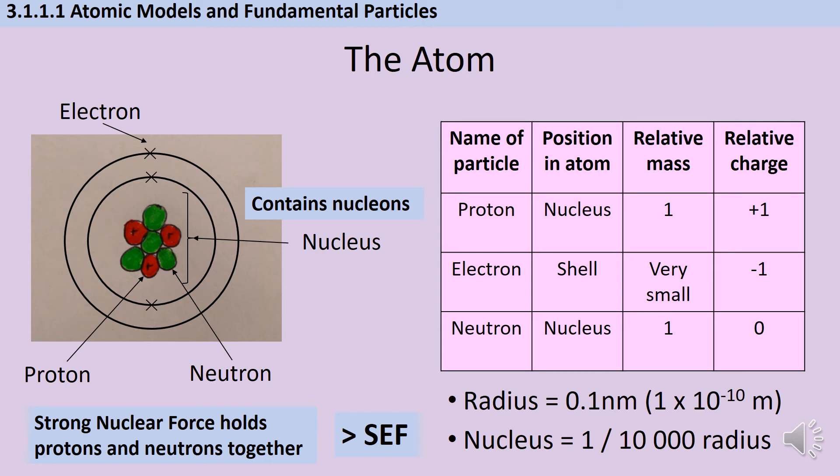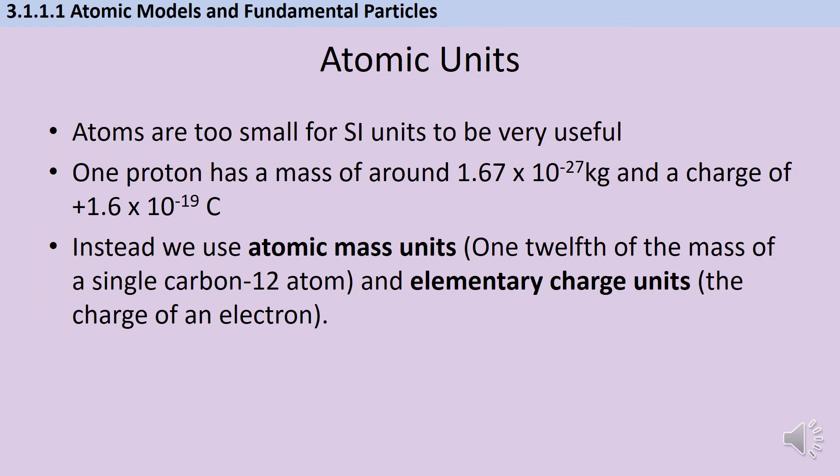Now, at GCSE, you would have been expected to write your answers in terms of relative masses and relative charges. But it's possible that nobody ever actually explained to you why it is that we're using these. So what you have to bear in mind is just how small these atoms are. As we see here, they've got a radius of about 0.1 nanometers. Now, what that means is that standard international units are not very useful for describing atoms. I mean, we could. One proton has a mass of about 1.67 times 10 to the minus 27 kilograms, and it has a charge of positive 1.6 times 10 to the minus 19 coulombs. Those are really, really small numbers, and they're a real pain to work with. So instead, we kind of made up our own units based on an atom. So we talk about atomic mass units, which are one twelfth of the mass of a single carbon-12 atom, and elementary charge units, which are the charge on an electron.